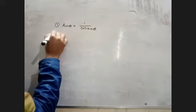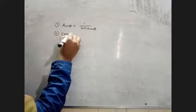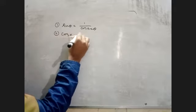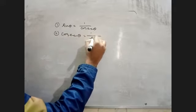Number 1 is sin theta equals 1 by cos theta. Number 2 is cos theta, which equals 1 by sin theta.